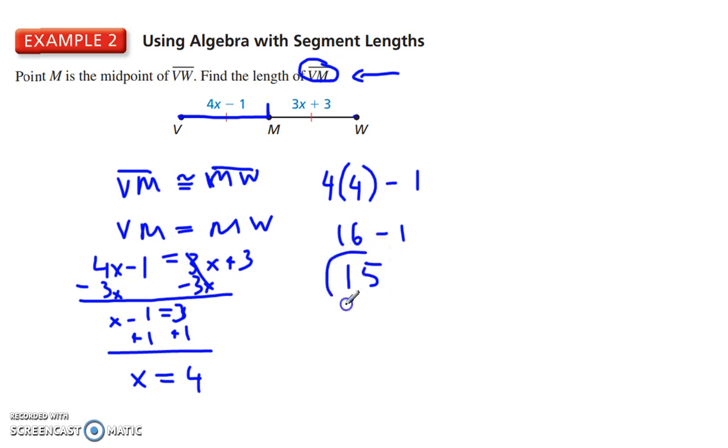We can check our answer by plugging it in here. We have 3 times 4 is 12, plus 3 gives us 15. So, check we did that correctly.